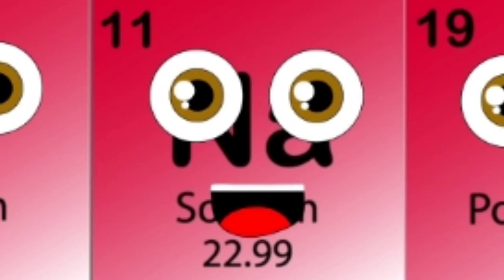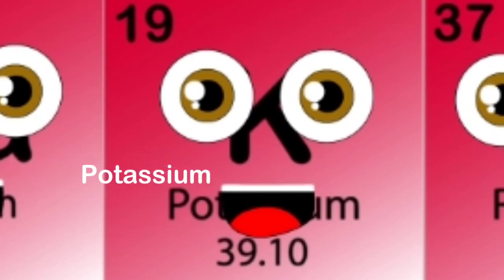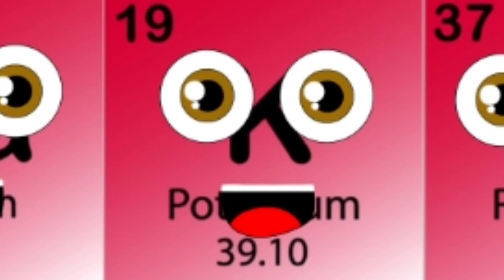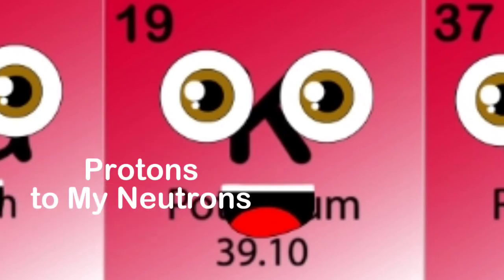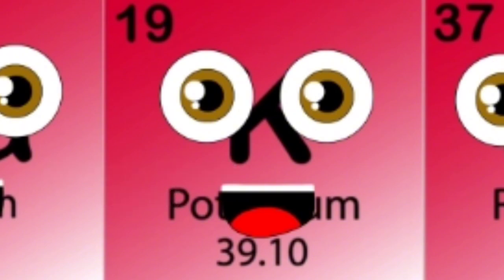My element is found in table salt by 40 percent, so when you sprinkle salt on your food you're eating elements! I'm a potassium atom, it's real nice to meet you. My atomic number is 19, that's my electron count too. If you add my protons to my 20 neutrons, you'll see my atomic mass at the bottom of my square.